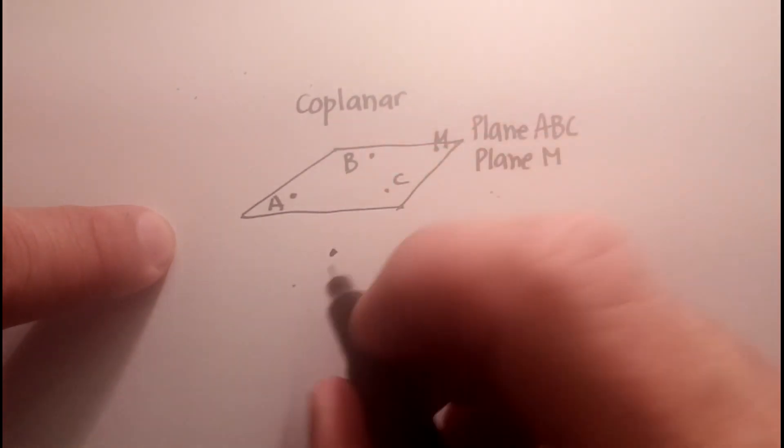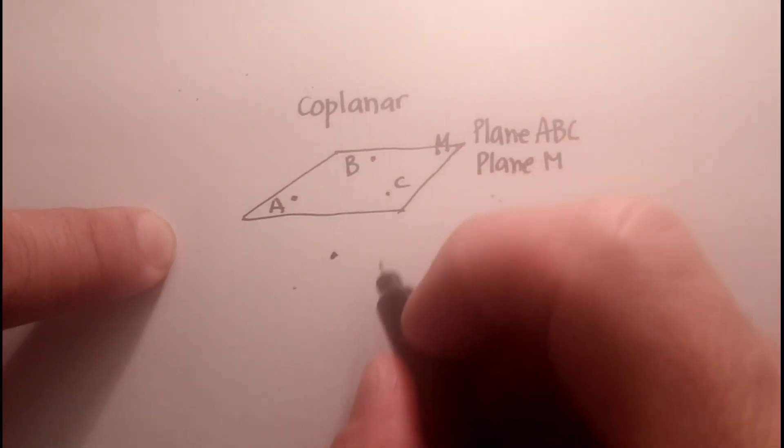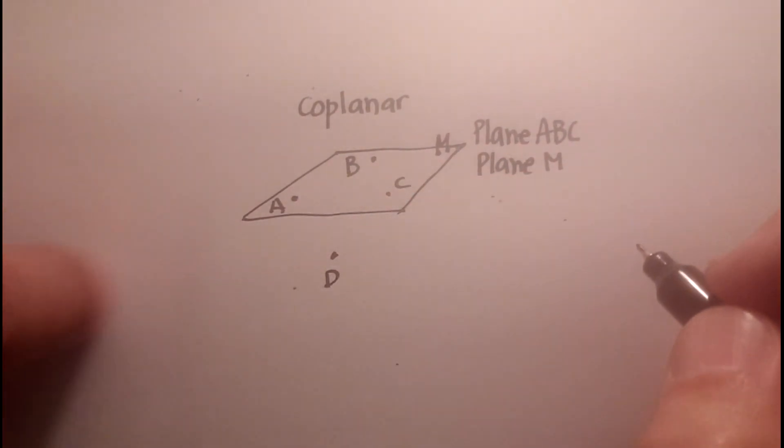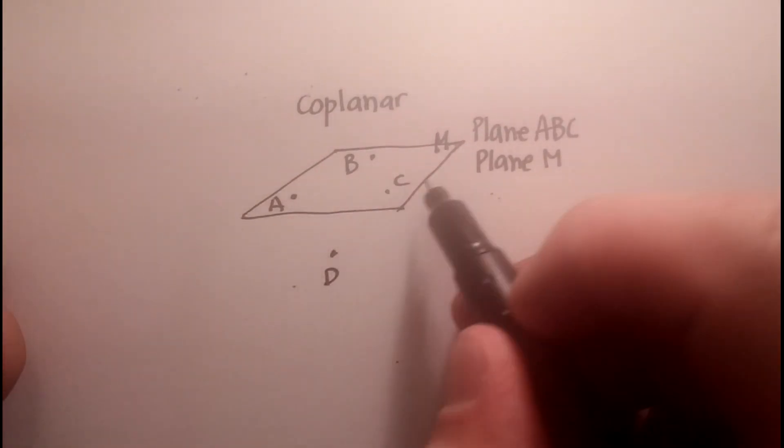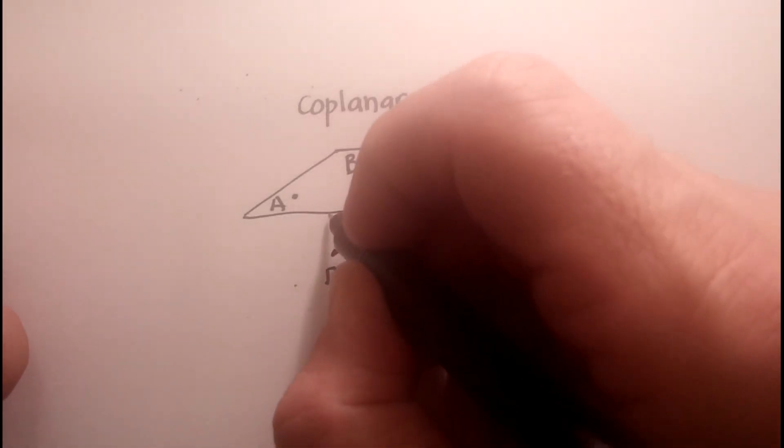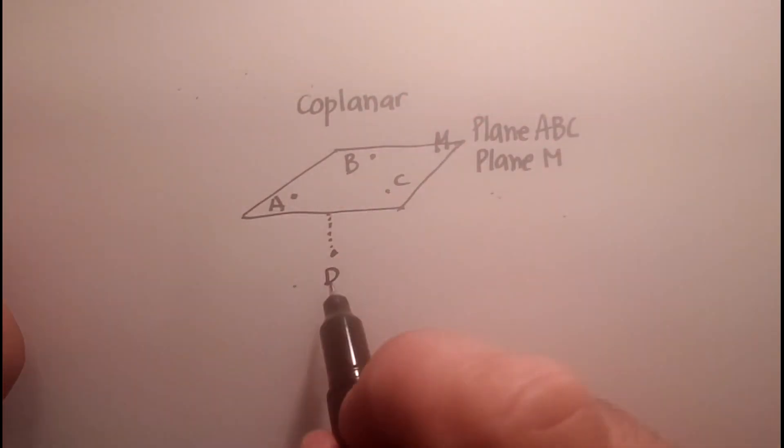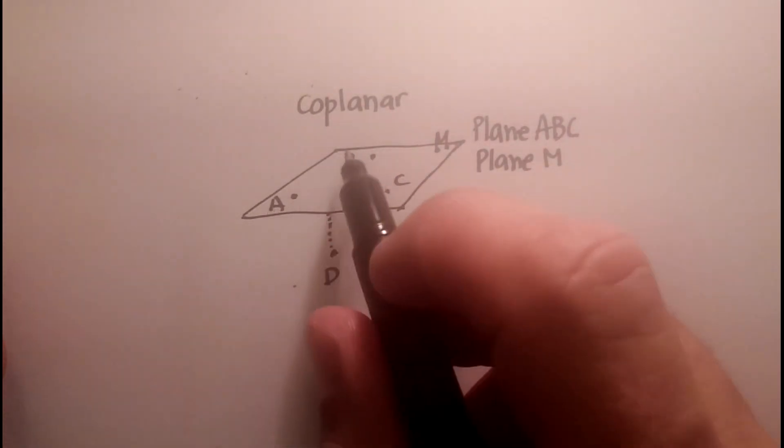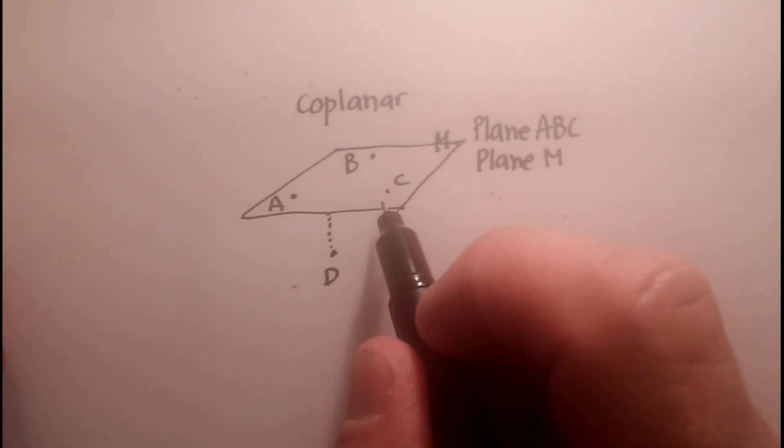If again, we're to draw another point off that plane, as in this one. Now it's kind of hard to tell whether it extends and lies on that same plane or not. But usually what you'll see is something that looks like this, a bunch of series of little dots, which kind of indicates that this point D lies below plane A, B, C.